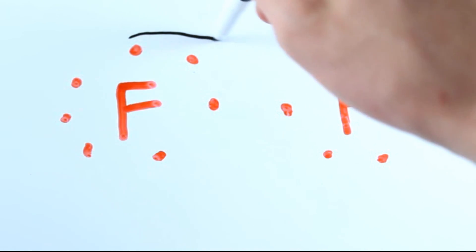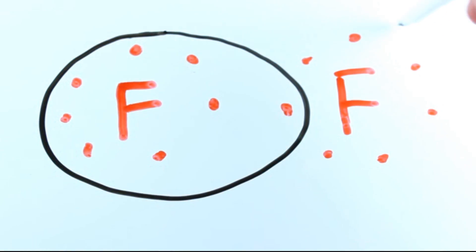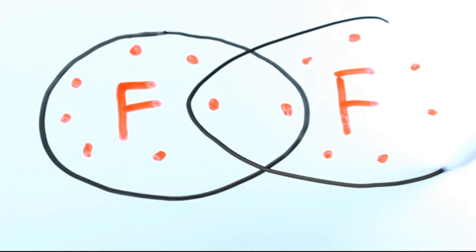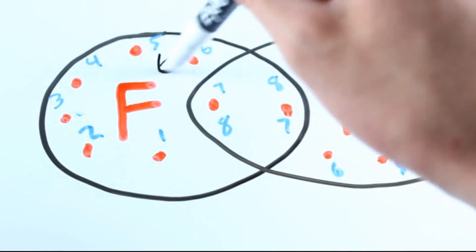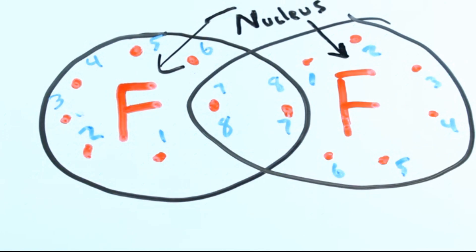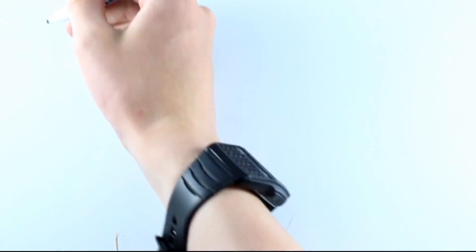If we draw a circle around this fluorine atom, but we include one of the other atom's electrons, and we draw a circle around the other one including the first one's electrons, they are sharing two in the middle. Each circle contains one nucleus and eight electrons, so both atoms are full and happy. That is one way atoms can bond.